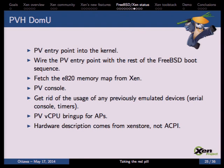We also have to use the PV path to bring up secondary CPUs, which is quite easy — much easier than on bare metal. Finally, it's important to note that all hardware description comes from Xen store, because on PVH we don't pass any ACPI tables into the guest, so all hardware description comes from Xen store.